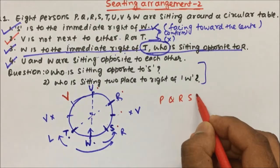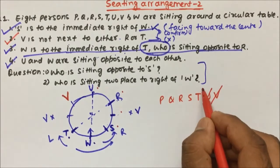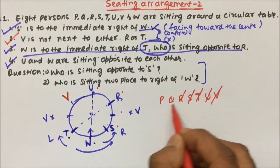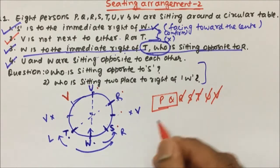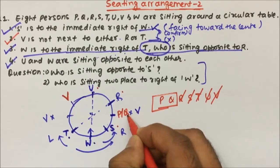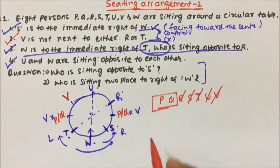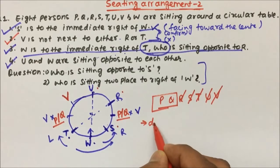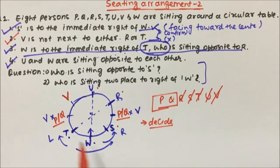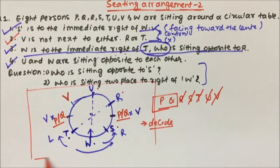Out of P, Q, R, S, T, U, V — we have already placed V, U, T, S, and R. Only P and Q are remaining, and no information has been given about P and Q. So either P or Q can sit in the two remaining spots. We cannot decide the exact positions of P and Q. This is our final circular arrangement.